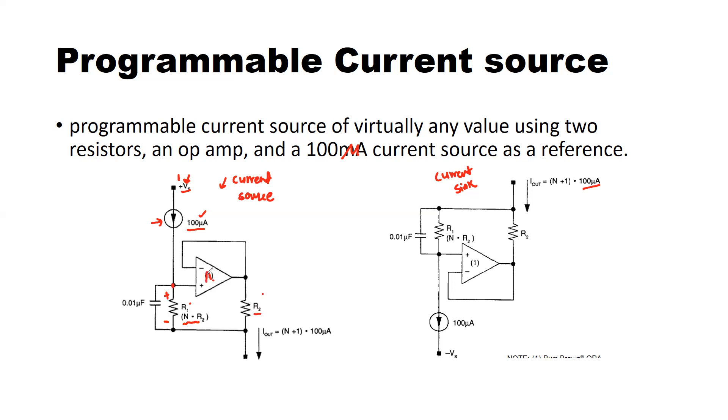Assuming the open loop gain of an operational amplifier is pretty high, we are using the op-amp as a voltage follower or a unity gain buffer.